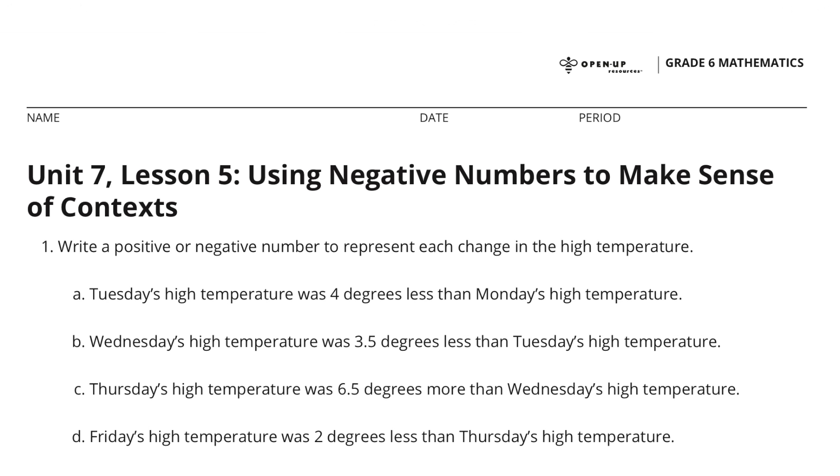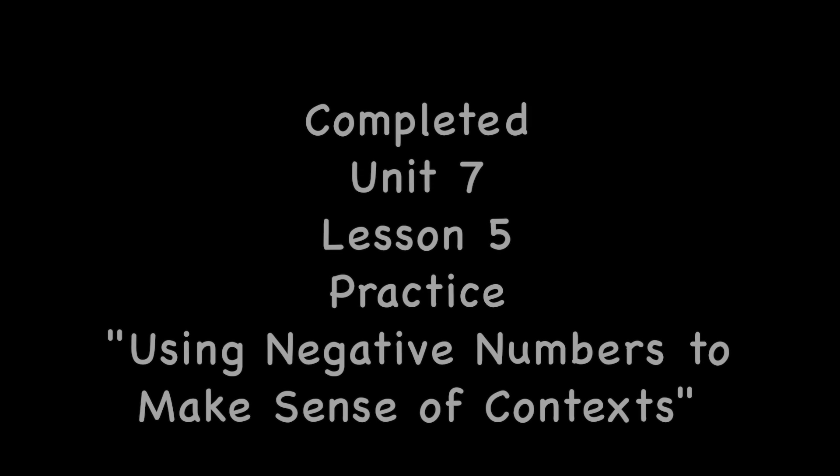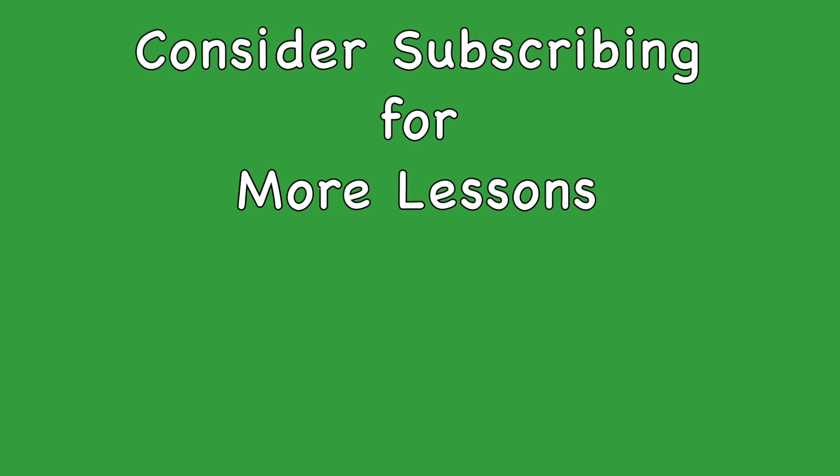Congratulations. You have completed Unit 7 Lesson 5: Using negative numbers to make sense of contexts.